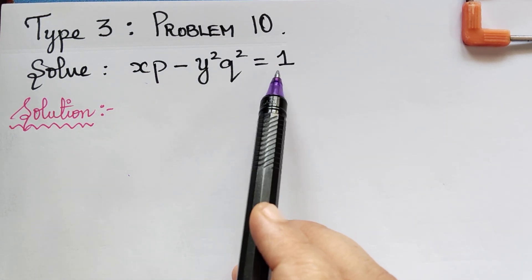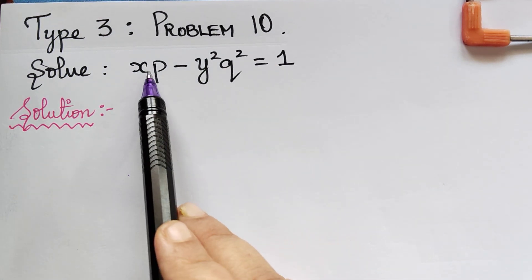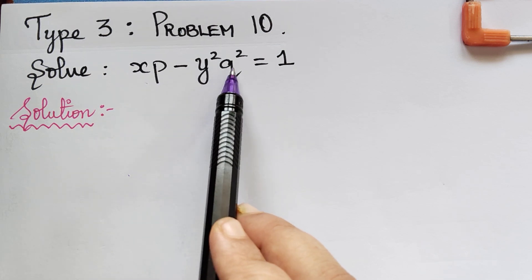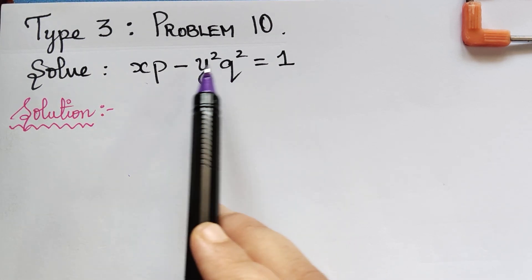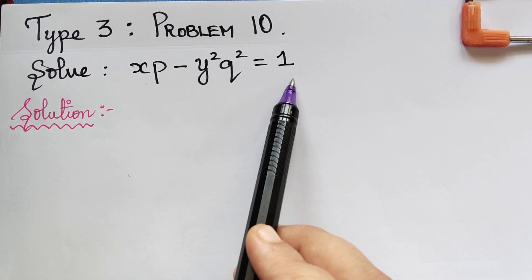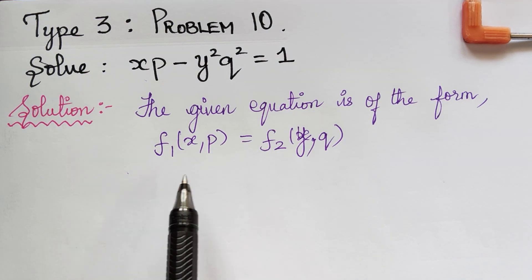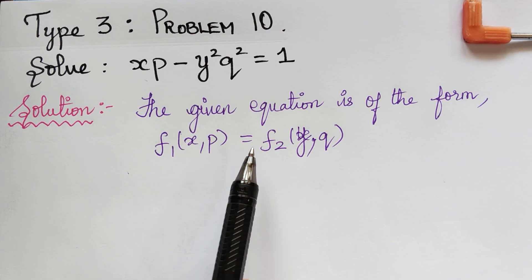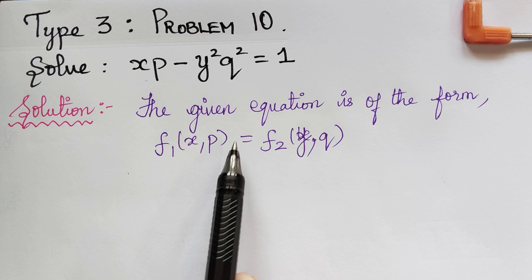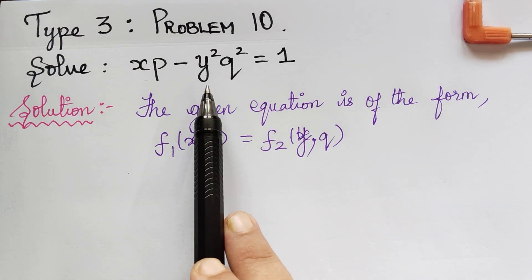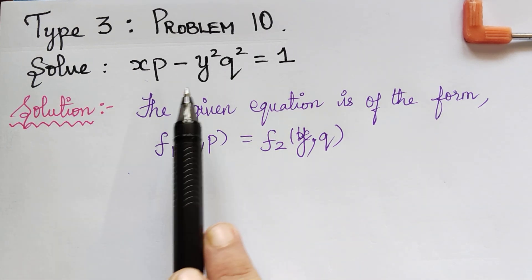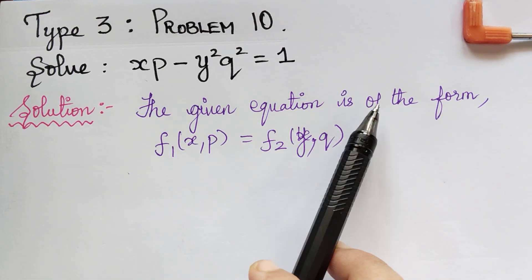We shall now solve this problem. We observe that only x, p, y, and q are present in this equation. Therefore, the given equation is of the form f1 of x, p is equal to f2 of y, q. So, we have to gather all the x, p terms to the left and y, q terms to the right.